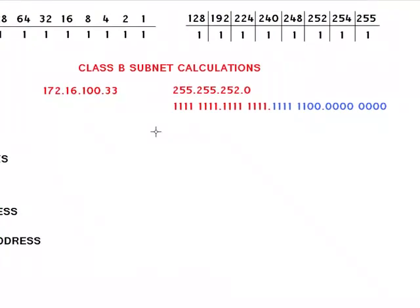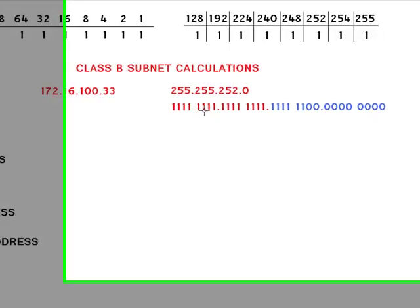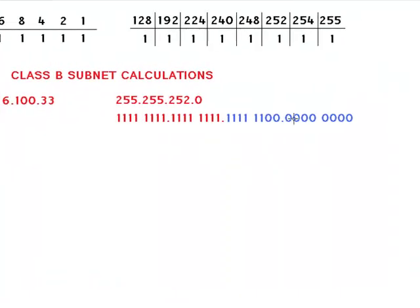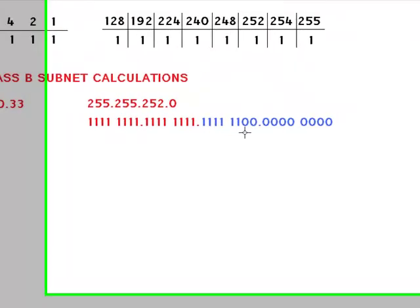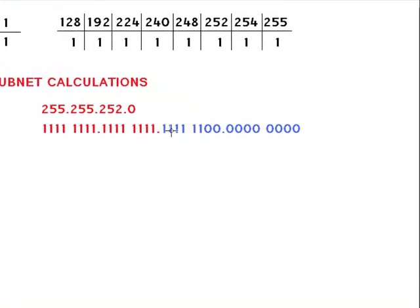For class B networks you have to know where to start doing your calculations. I've changed the colors to show you — this is the boundary for class B networks, which is the second octet. So all your mask calculations will be in the third and fourth octets. That's very important.